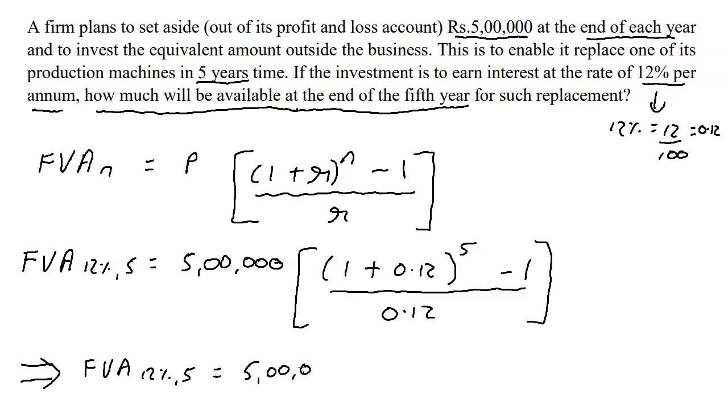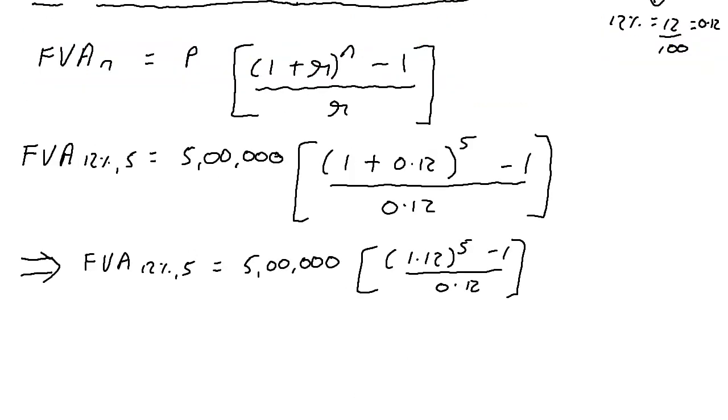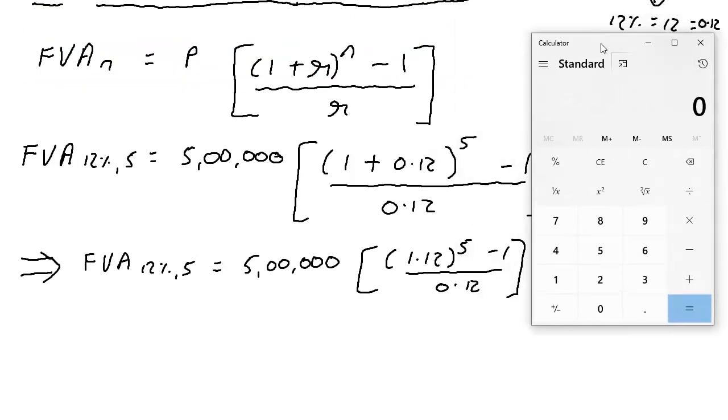Five lakhs open bracket, and I'm adding so it's going to be 1.12 to the power of five minus one upon 0.12. So whatever we solve from inside the bracket multiplies into five lakhs and that's our answer.